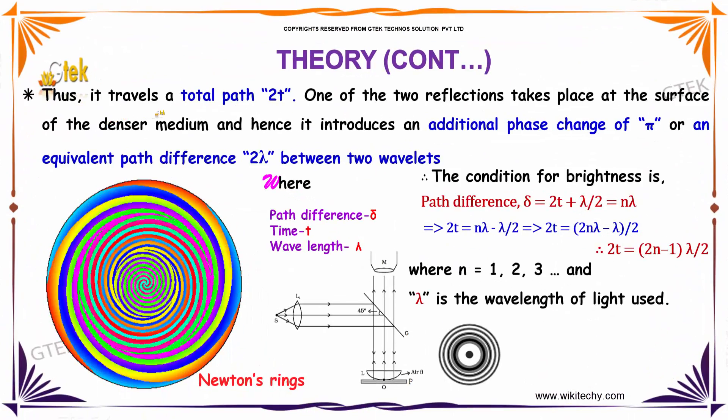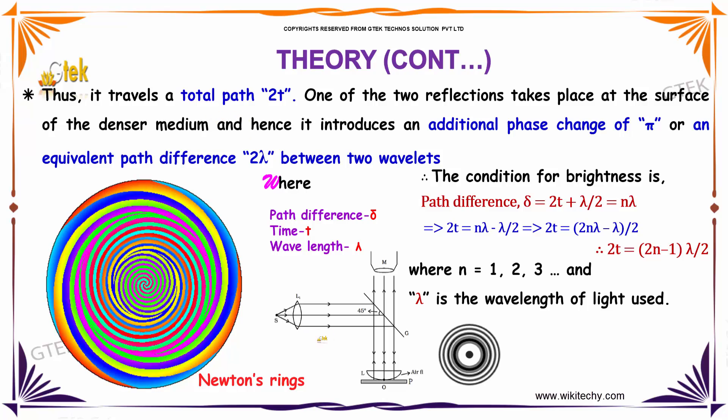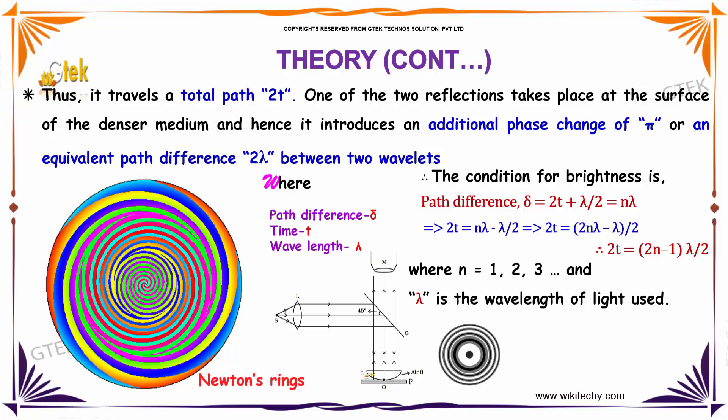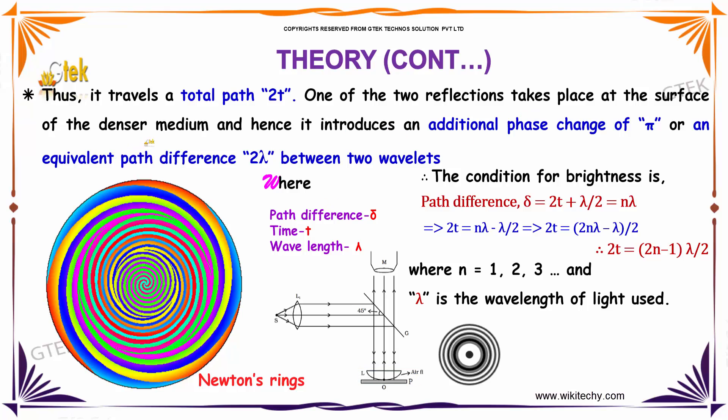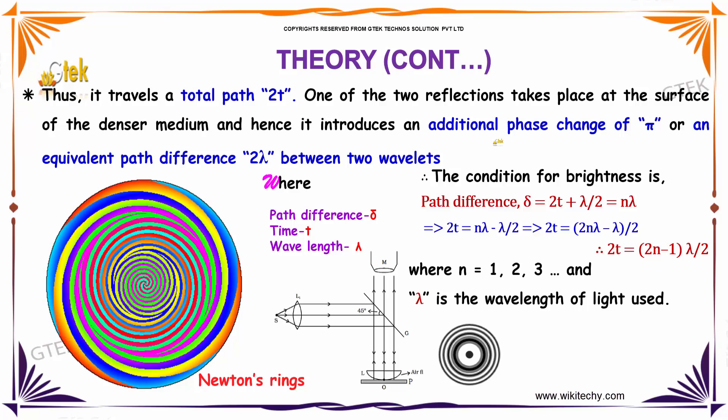Thus it travels a total path of 2T. One of the two reflections takes place at the surface of the denser medium and hence it introduces an additional phase change of π or an equivalent path difference of λ/2 between two wavelets.